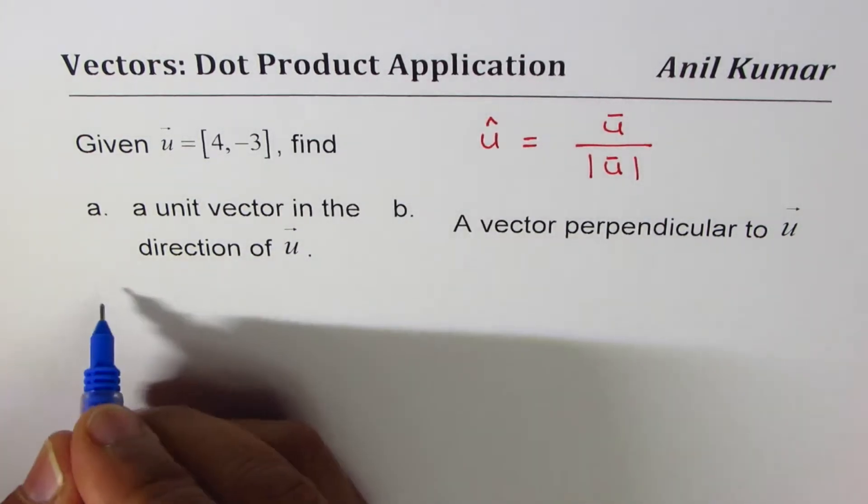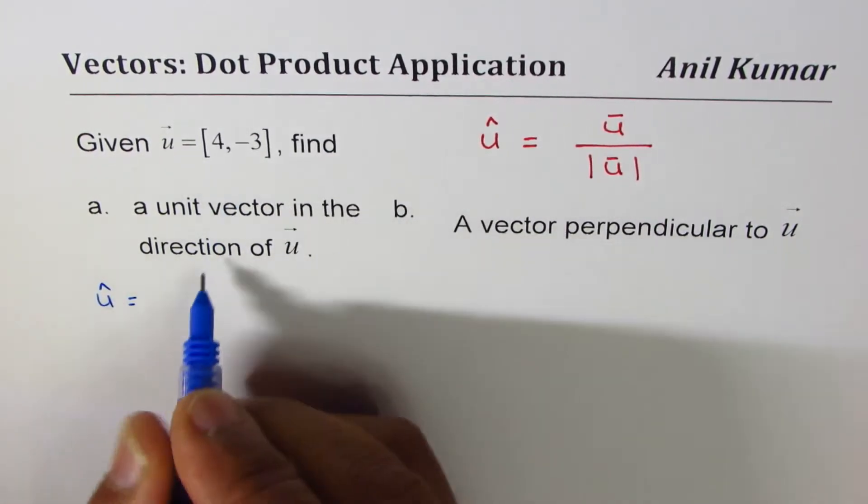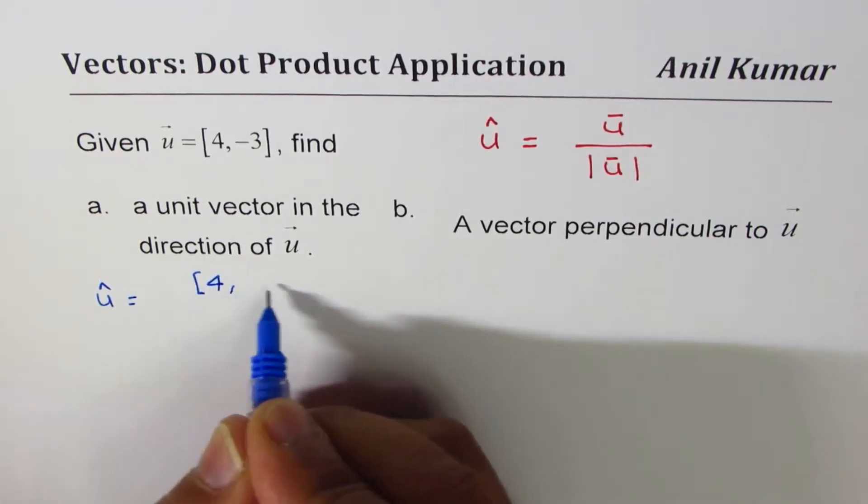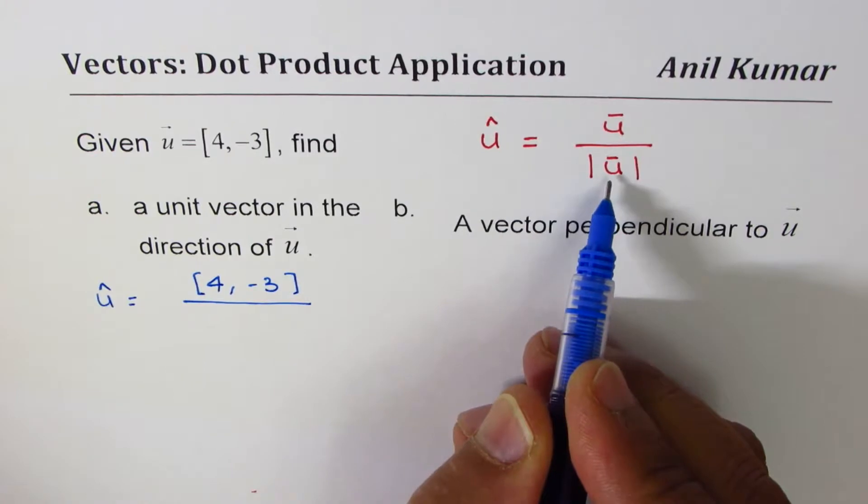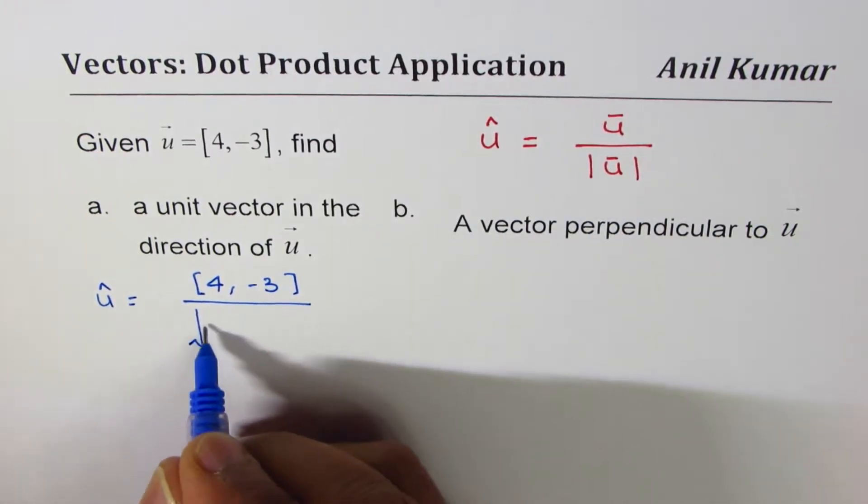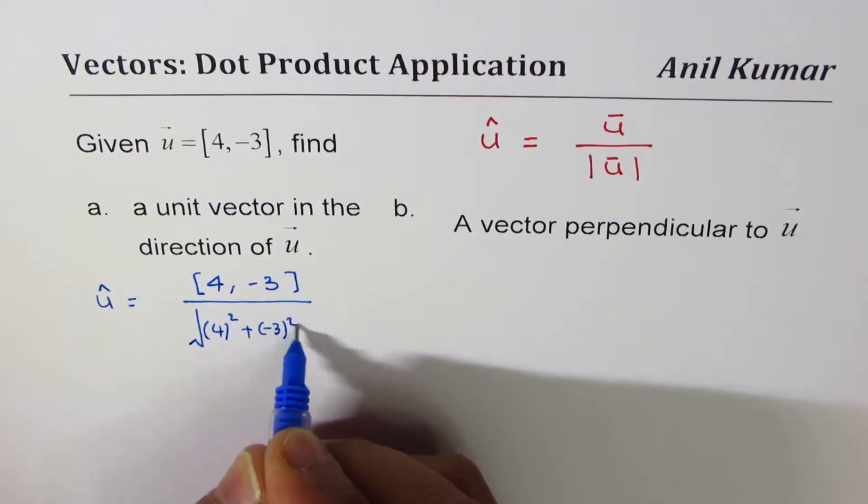So unit vector û will be equal to the vector [4, -3] divided by its magnitude, which is square root of 4² plus (-3)².